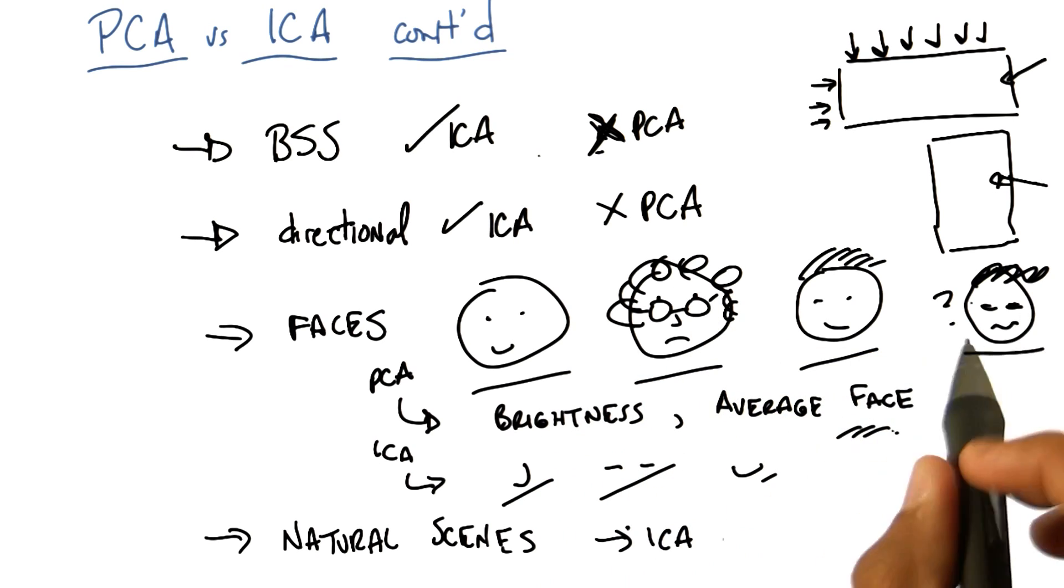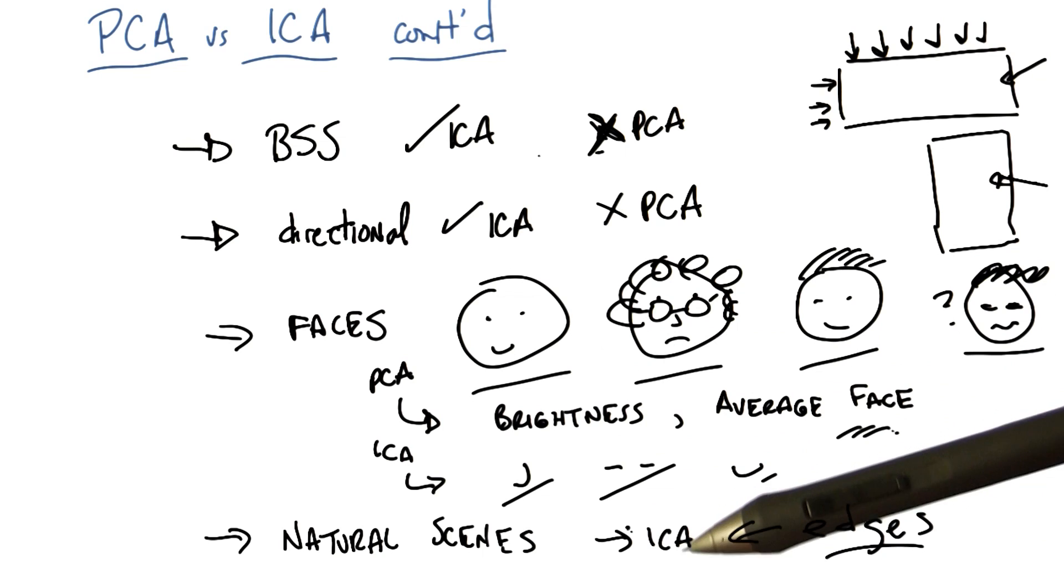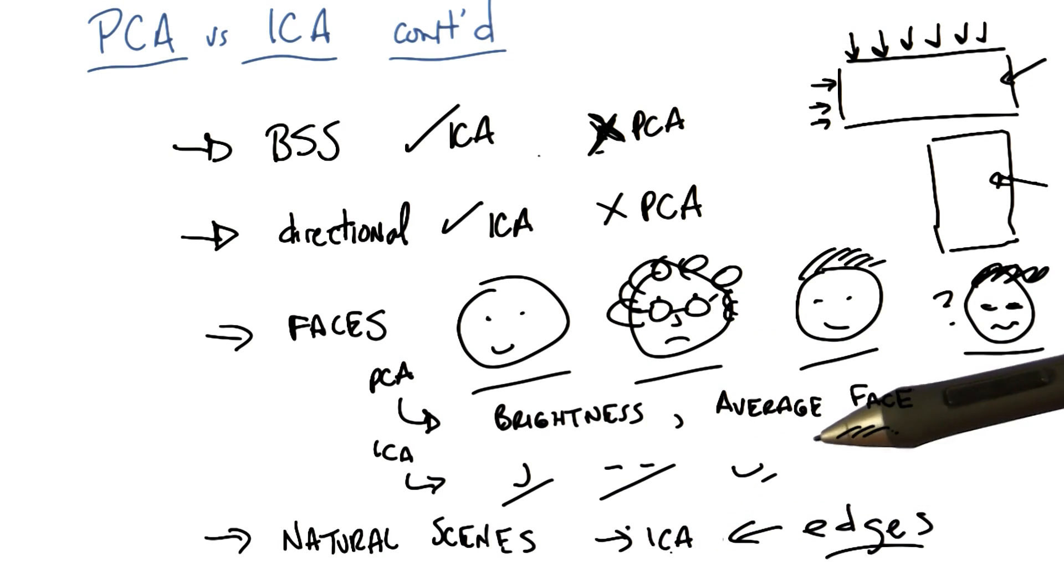You get brightness, you get sort of the average image, things that really make sense if your goal is to do reconstruction. But ICA actually gives you something different. What do you think the independent components, the underlying causes, so to speak, of natural scenes are? I'm still thinking about the face part. But by analogy, it seems like it would be things in the world like trees and rocks and ground. Not quite and that's I think in part because there are too many of those things that kind of overlap in too many different ways. It actually finds something more fundamental. Edges. That's exactly right. ICA finds edges.